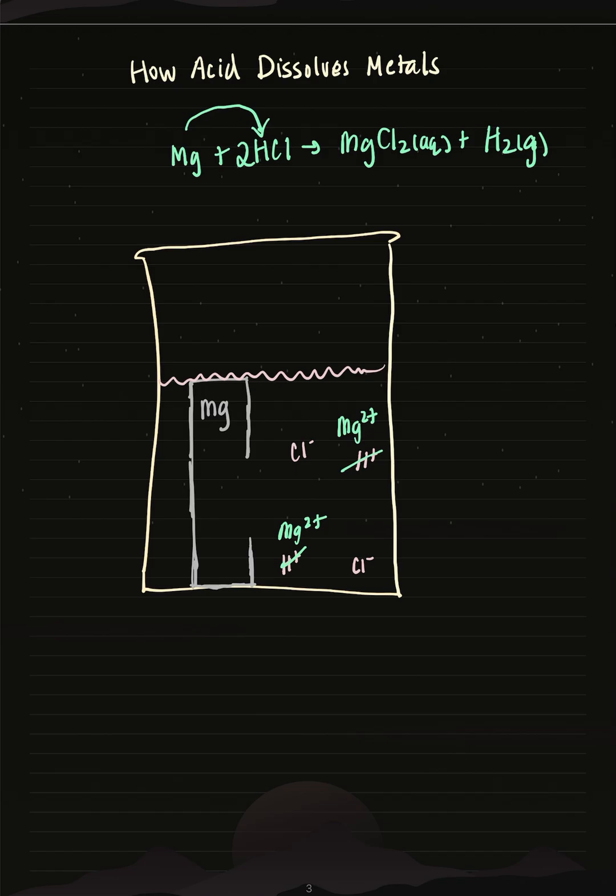So what about the hydrogens? Well, as we can see, we form hydrogen gas as a byproduct. So these hydrogen ions come together, forming hydrogen gas.